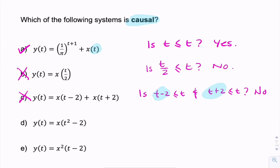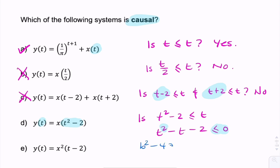Next, question d. Again, we're only interested in the bit between the brackets: t squared minus 2. Is that always less than or equal to t? Let's check — is t squared minus 2 always less than or equal to t? Rearranging: is t squared minus t minus 2 always less than or equal to 0? Because this is a quadratic, for this always to be negative or less than or equal to 0, we would want the discriminant — b squared minus 4ac — to be less than or equal to 0.